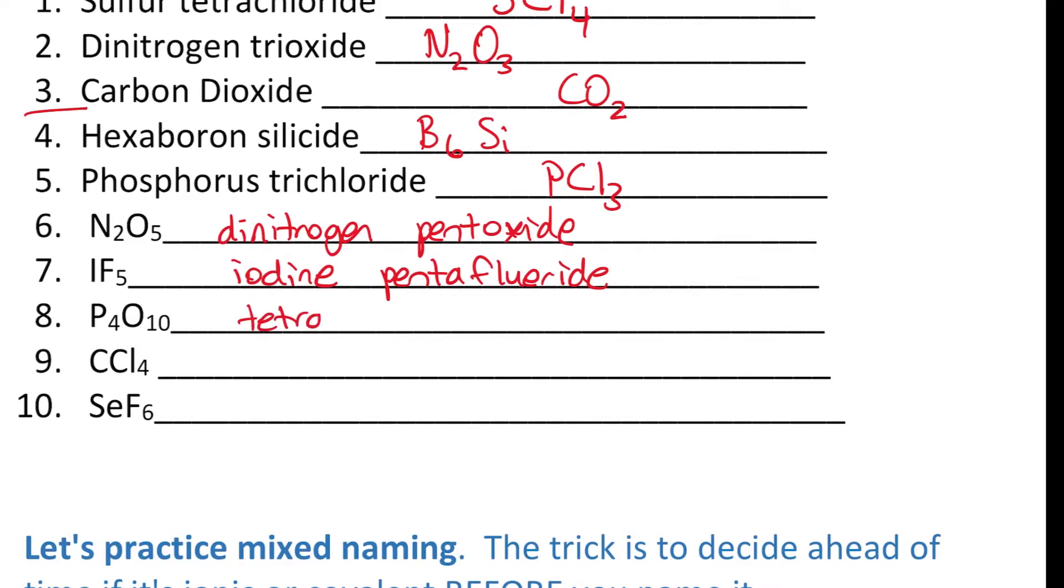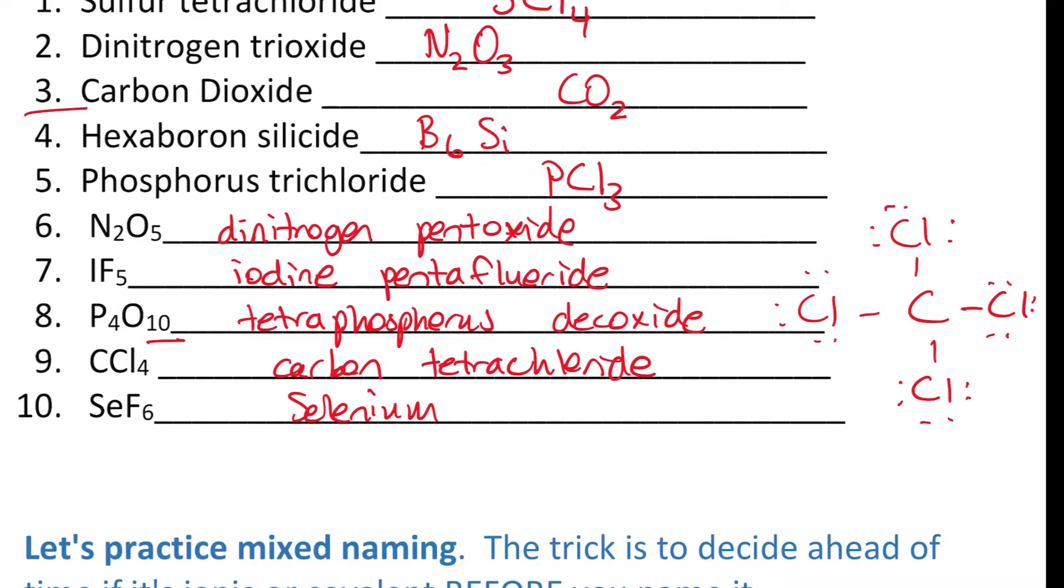P4O10, tetraphosphorus, and then I've got 10 oxygens, dek, deca oxide or dekoxide. How about CCl4? C is carbon, we're not going to call it monocarbon because we never start with monocarbon. There's four of them, so mono, di, tri, tetra, carbon tetrachloride. That's this carbon with four chlorides around it, carbon tetrachloride. If you've done dot notation, so much fun guys. And SeF6, so selenium hexafluoride.